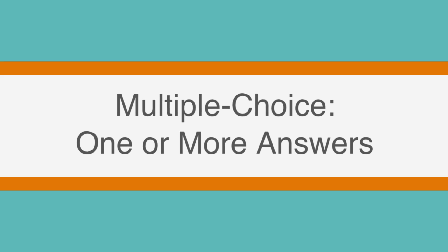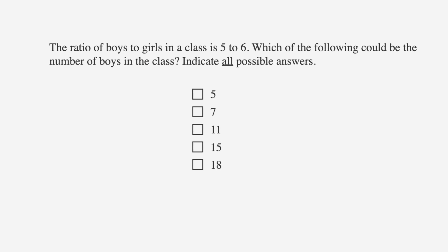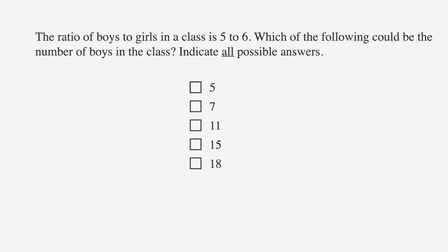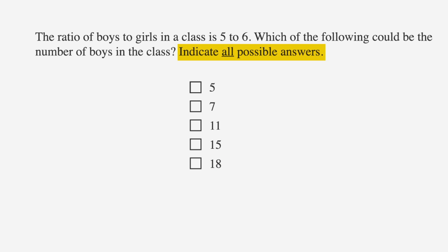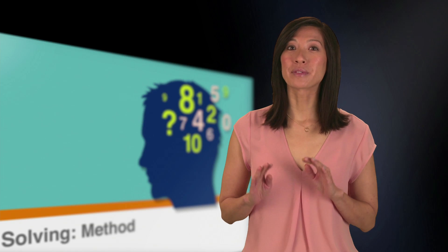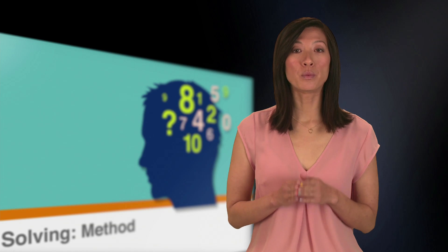Using our step-by-step method, we were able to easily break down the problem and solve it. Now let's move on to the second question type: multiple choice with one or more answers. The ratio of boys to girls in a class is 5 to 6. Which of the following could be the number of boys in the class? Indicate all possible answers. Note the squares next to the answers — these indicate the question type. The options are 5, 7, 11, 15, and 18. Throughout the entire test, including the verbal sections, the presence of squares next to answer choices means that more than one answer is possible.